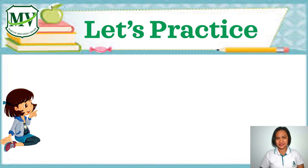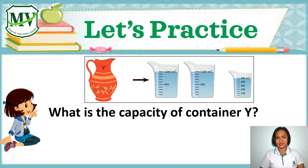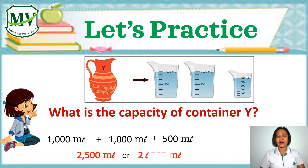Let's try it again. What is the capacity of container Y? Container Y contains 2 containers of 1,000 ml and 1 container of 500 ml. So if we add together: 1,000 plus 1,000 plus 500 is equal to 2,500 ml, or 2 liters 500 ml.